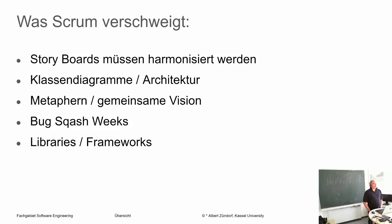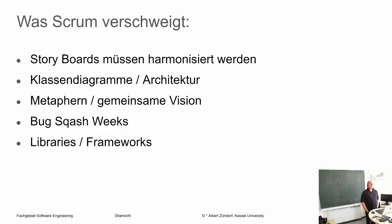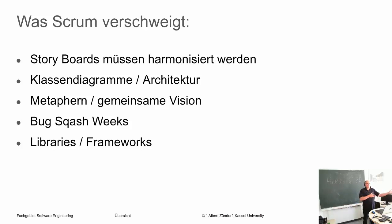Dafür müsst ihr dem Kunden in einem Release-Meeting auch irgendwie Funktionalität präsentieren, wo er sagt: ja, das ist die 400.000 Euro wert, weil jetzt laufen bei mir die und die Abläufe in der Firma viel besser und ich spare Kosten ein, das rechnet sich für mich. Und es gibt eben auch manchmal Quartale, da hat man nur Bugfixing gemacht und Renovierungsarbeiten — gar keine neue Funktionalität vorzuweisen. Dann guckt der Kunde immer so ein bisschen sparsam: jetzt habe ich irgendwie drei Monate gewartet, 400.000 Euro bezahlt — und kriege das Gleiche, was ich vor einem Quartal auch schon hatte. Was habt ihr denn die ganze Zeit gemacht?